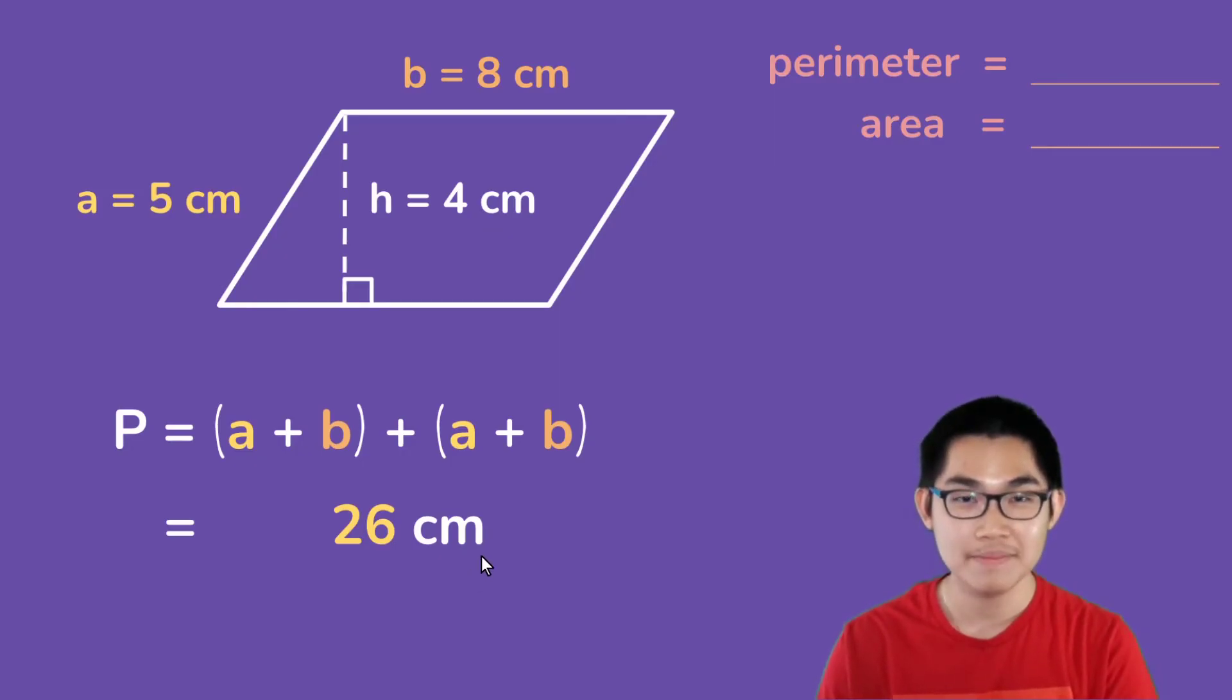And so in this parallelogram, the perimeter is 26 centimeters, and don't forget to include your unit at the end.